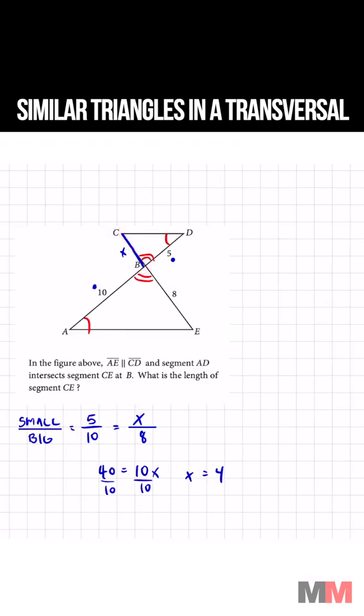But we're not trying to find X, we got to find CE. So the last part all we got to do is add up X which equals 4 and add it to BE which equals 8. 4 plus 8 equals 12. Throw a like and subscribe and I'll see you in the next episode.